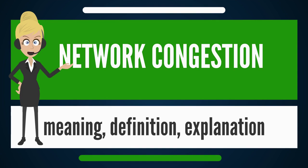Network protocols that use aggressive retransmissions to compensate for packet loss due to congestion can increase congestion, even after the initial load has been reduced to a level that would not normally have induced network congestion. Such networks exhibit two stable states under the same level of load. The stable state with low throughput is known as congestive collapse.